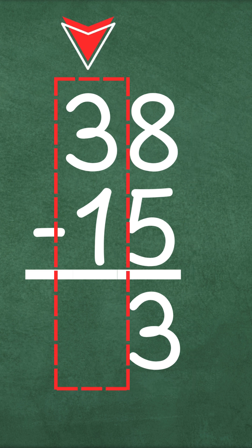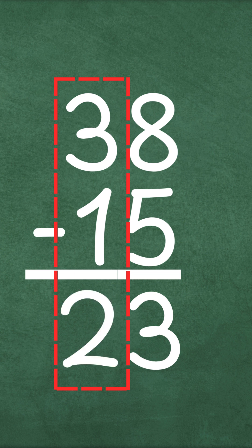Now let's move to the 10s column. What's 3 tens minus 1 ten? Of course. 3 minus 1 equals 2. Two tens.